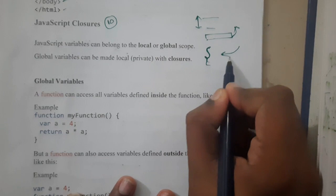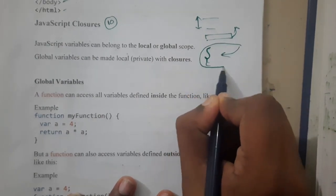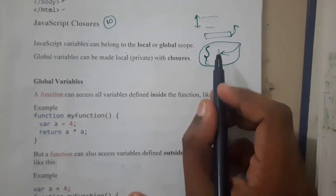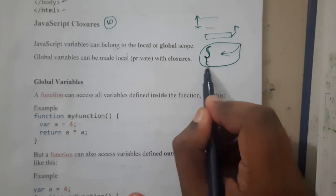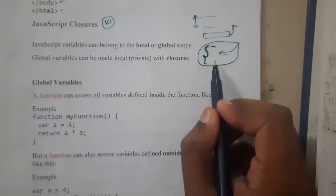Local variables' lifespan is from where to where you can access them. If it is defined inside a function, you can access it inside the function only. Its birth will be here and its death will be here. Once the function starts, if it is in the first line, at that time it is created.